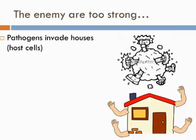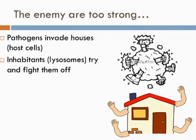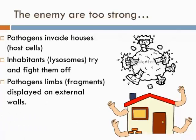The pathogens get inside the houses — the host cells — and they start attacking the cells, trying to take them over. The cells put up a good fight; the inhabitants try and fight back, but it's not always a success. During the fight there are some injuries, and what the inhabitants do is display these limbs — the parts that have been torn off, the antigens — on the surface of their house, on the surface of the body cells, just for everyone to be aware of what's happened. They've been infected. This also marks the cell for destruction — they know they've lost and need to be destroyed to prevent infection from spreading further.